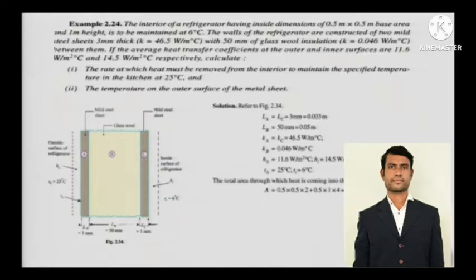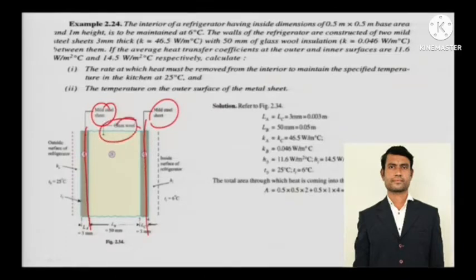This is a mild steel sheet, and once again to reduce the heat transfer they have introduced glass wool. We all know that glass wool is actually an insulator - it obstructs the heat. In due time I will tell you what insulation means, but for now just understand that glass wool is an insulation.